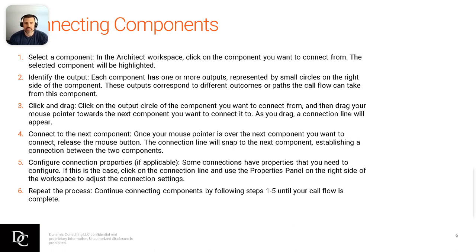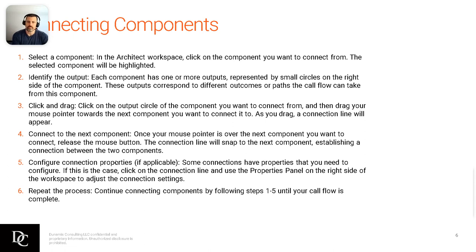Connect to the next component — the arrows are already there for you. As you start adding components, more arrows will drop down. There may be a dotted box that pops up below one of those, and you can click and drag those as needed. Configuring the connection properties — if applicable. For example, with play audio, you're going to configure the output whether it's text-to-speech or a prompt, and in that case there won't be additional connection properties. Other components may have connection properties, and as we work through the properties panel in our hands-on exercises, you'll see hands-on examples of that. You'll continue repeating those processes until you're complete with your call flow.